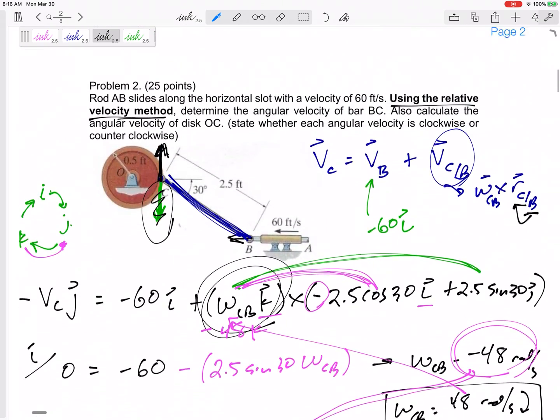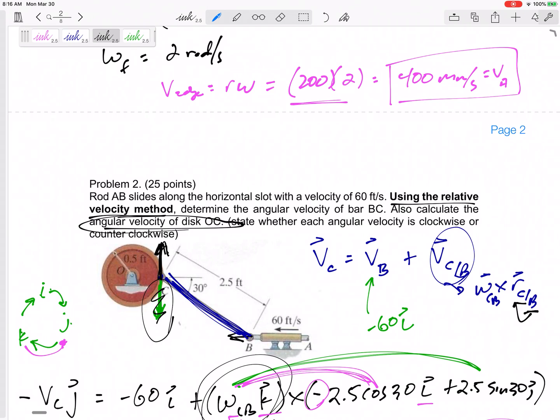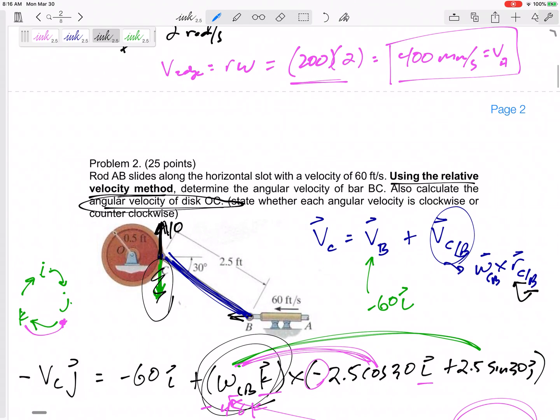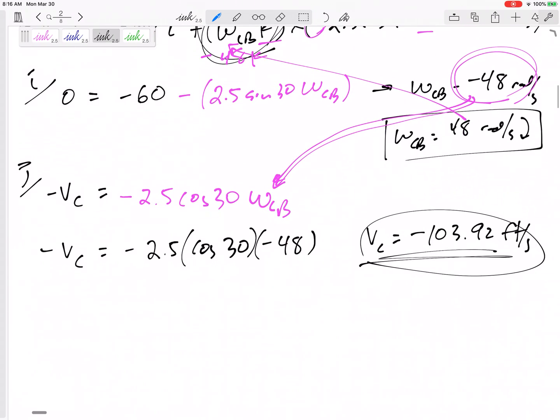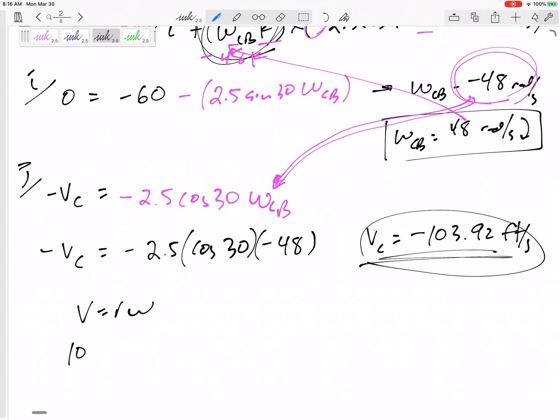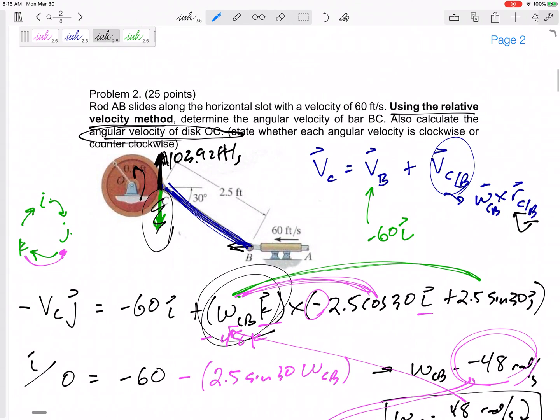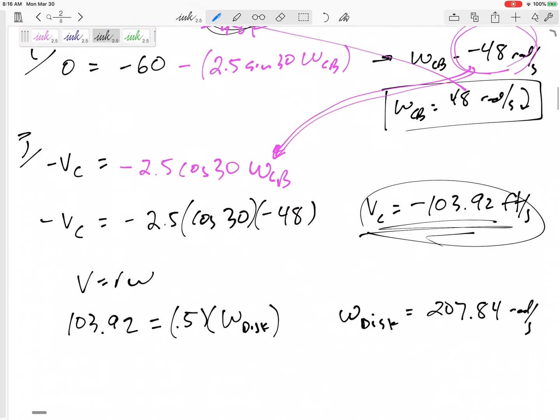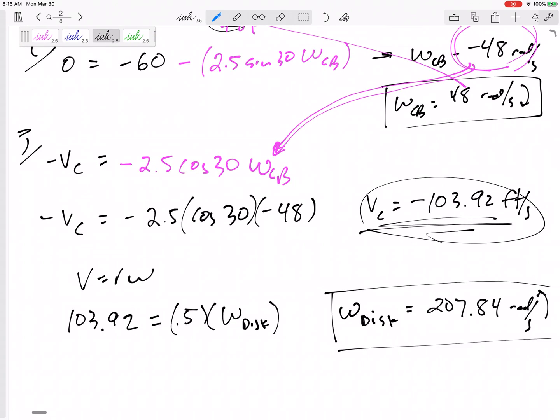All right. One more step. That's not what it really asked for. It asked for the angular velocity of the disc. Well, if I know that this is 103.92 feet per second right here, then what does that make the angular velocity right here? V equals R omega. 103.92 equals an R of 0.5 times the omega of the disc. Omega of the disc is 207.84 radians per second. Clockwise or counterclockwise. Well, note that velocity of C was going up. That is counterclockwise. Box that in right there.